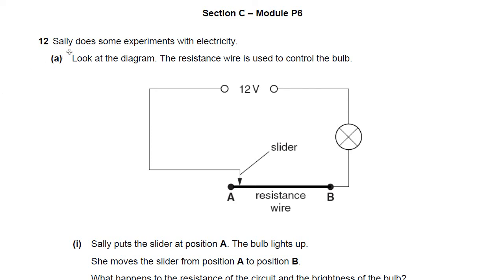Sally does some experiments with electricity. Look at the diagram. The resistance wire is used to control the bulb — that's this part here from A to B. Sally puts the slider at position A and the bulb lights up. She moves the slider from A to B, and you're asked what happens to the resistance of the circuit and the brightness of the bulb.